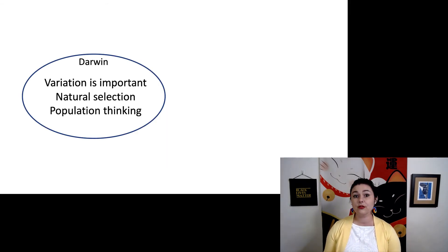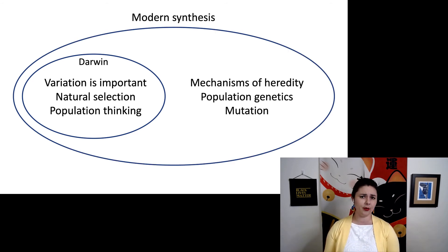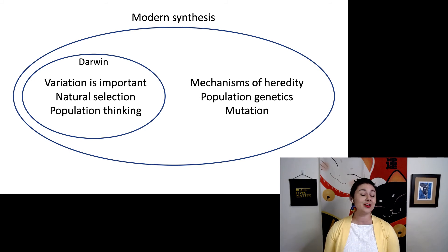From Darwin, we got these key ideas: variation is important, natural selection is one of the main mechanisms of evolution, and we have to look at the level of the population. Adding from Mendel, we got the mechanisms of heredity, and now we have a new field called population genetics, along with the ideas of mutation — that new things can arise — because now we have an understanding of how heredity works.